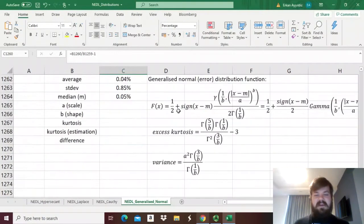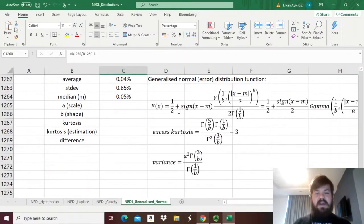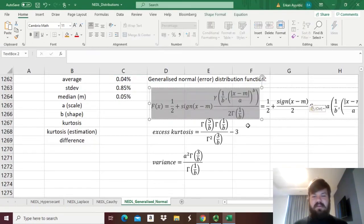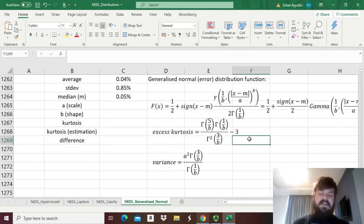In terms of the mathematical representation of the generalized normal distribution function, it can seem a little bit overwhelming at first. It has not one, not two, but three different parameters that shape what the distribution is like: a location parameter m, a scale parameter a, and a shape parameter b. The distribution function is symmetric around one half.